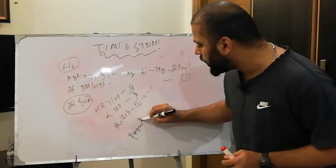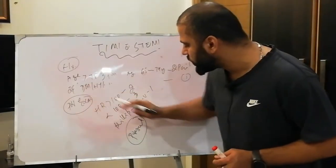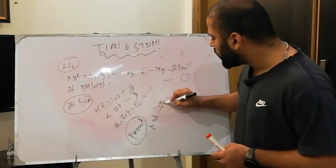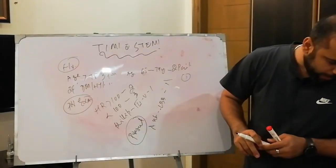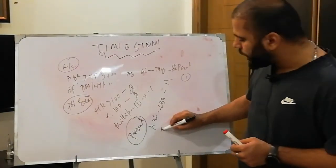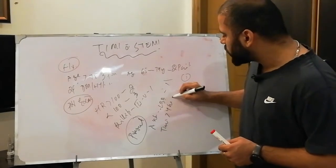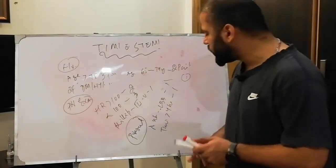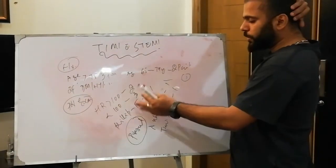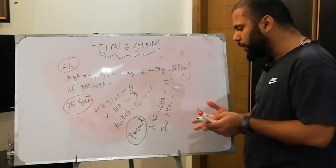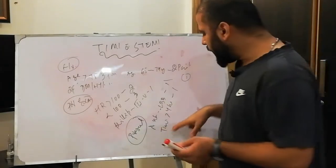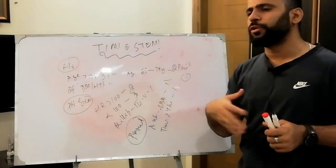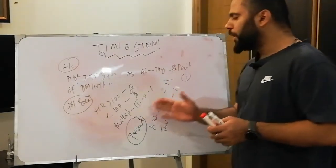On presentation, we have two things in the TIMI STEMI score. If the patient presents with anterior ST elevation or new onset LBBB, then one point. And if the time to treatment is more than four hours — meaning the patient is coming after four hours — then one additional point.